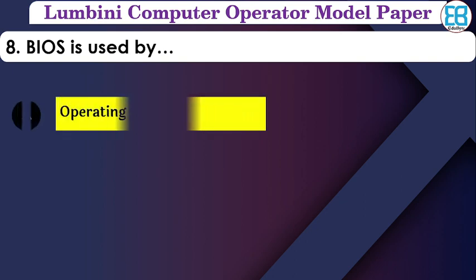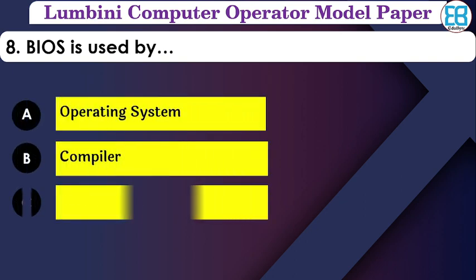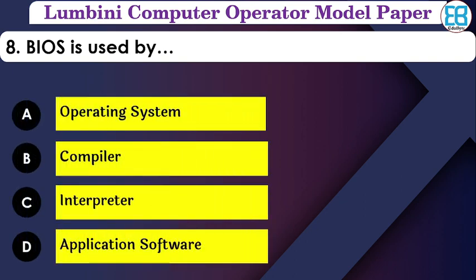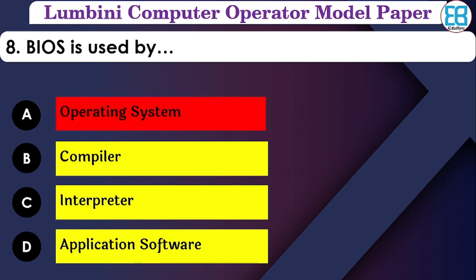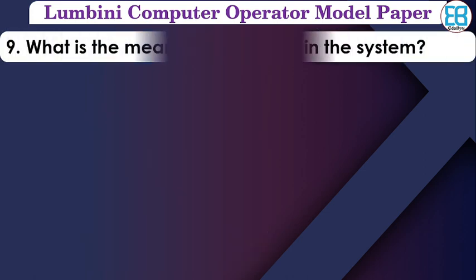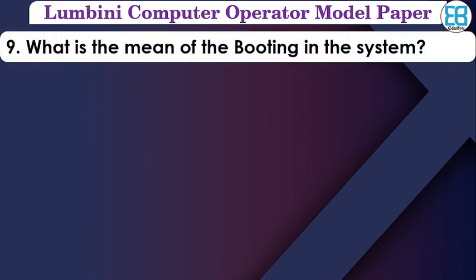The options include BIOS, operating system, compiler, and interpreter — that is, application software. The correct option is operating system. An operating system (OS) is what the users interact with directly.